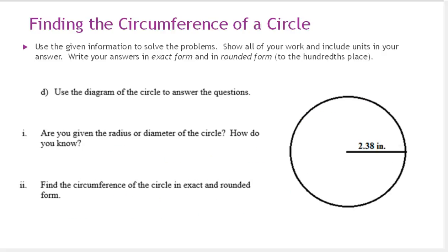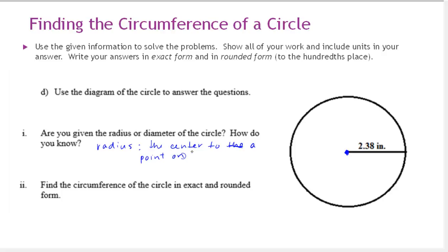For the last problem, we're given another circle diagram. Is this a radius or diameter? Notice the line goes from the center of the circle to a point on the circle, but not from one end to the other. The value is centered right above this segment — this is a radius, because it goes from the center to a point on the circle, going only halfway across.